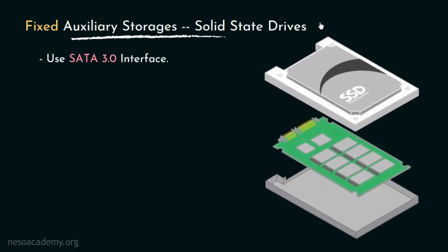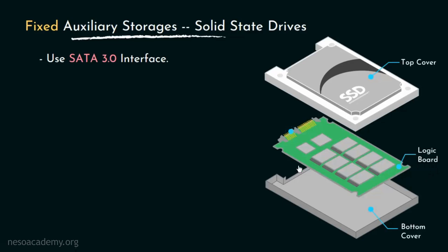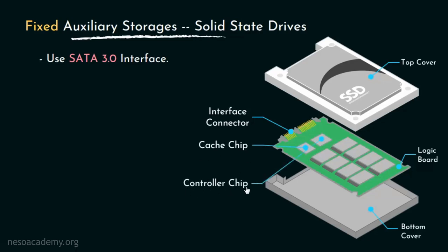Let's now get into the internal architecture of the 2.5 inch SSDs. These are the top and the bottom covers. Now in between these, there is a logic board. Here at the top of it, we can observe two rows of interface connectors. In this portion, we plug in the SATA cable and this is where the power supply is connected. Now SSDs have a built-in cache chip on their logic board and they also have the controller chip that controls the operations within the SSDs.